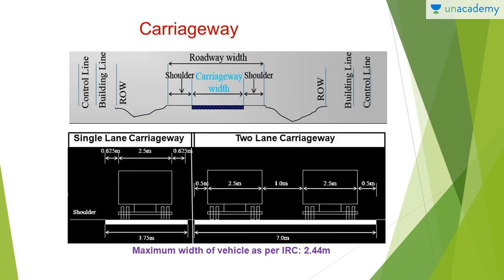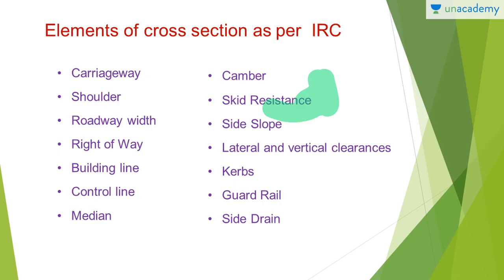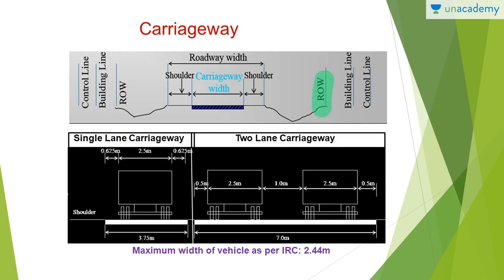Now let us start with the carriageway. This is a cross section of the road. As you can see, the center part is called the carriageway width, and next to that you have two shoulders on each side. The total of one shoulder plus carriageway width plus the other shoulder is known as roadway width. After that you have the ROW, that is right of way, on both sides. Next to that you have building line, and next to that you have control line. This is a sample cross section of a road.